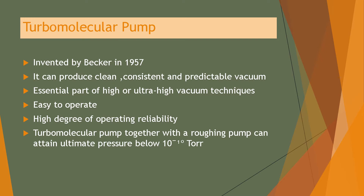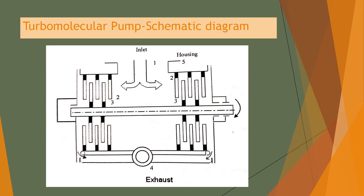The turbo molecular pump can produce clean, consistent and predictable vacuum. It is an essential part of high or ultra-high vacuum techniques, easy to operate, and has a high degree of operating reliability. Together with a roughing pump, it can attain ultimate pressure below 10 to the power of minus 10 Torr. This is the schematic diagram of the turbo molecular pump, showing an inlet valve, exhaust portion, the central rotor, stator blades, and housing.